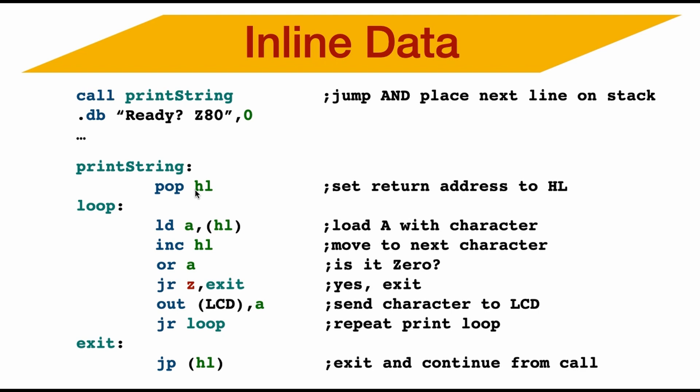So for instance, here's our print string routine. And immediately I'll call pop HL, which will set the return address to HL, which is now pointing to the letter R. And then we can just iterate through the string, getting the value or pointing to HL into A, incrementing HL to the next address. So now it's sitting at E.